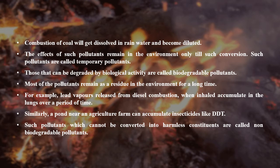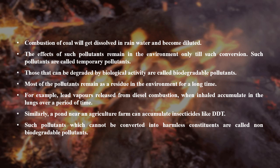Those that can be degraded by biological activities are called biodegradable pollutants. Most of the pollutants remain as a residue in the environment for a long time. For example, lead vapours released from diesel combustion, when inhaled, accumulate in the lungs over a period of time. Similarly, a pond near an agricultural farm can accumulate insecticides like DDT. Such pollutants which cannot be converted into harmless constituents are called non-biodegradable pollutants.